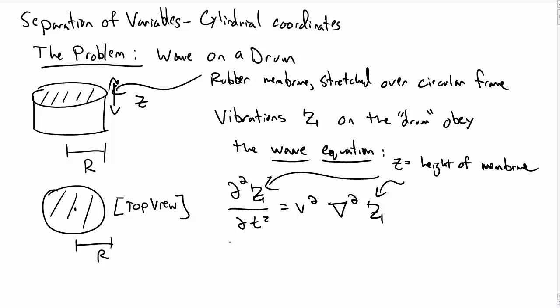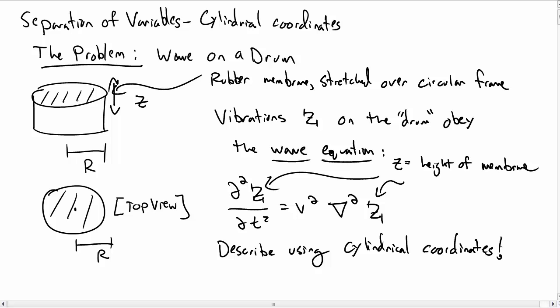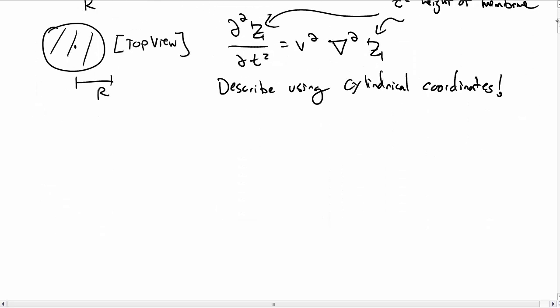We want to solve this equation, but we can't do it just in one dimension. We have to use cylindrical coordinates, a curved coordinate system, because our membrane itself is in a nice curved coordinate system. So we'll describe z as a function of s, phi, and t.